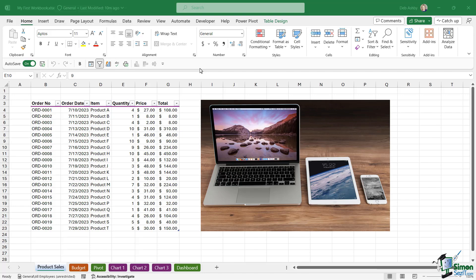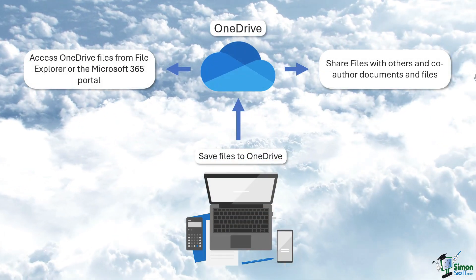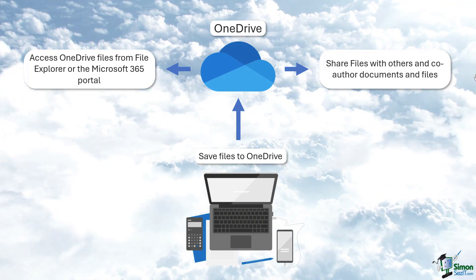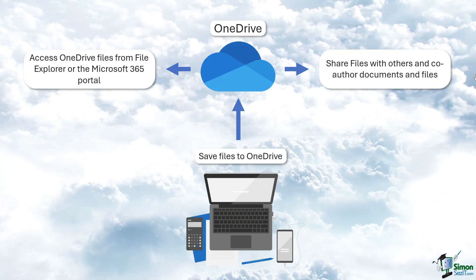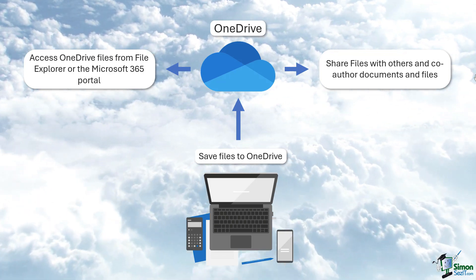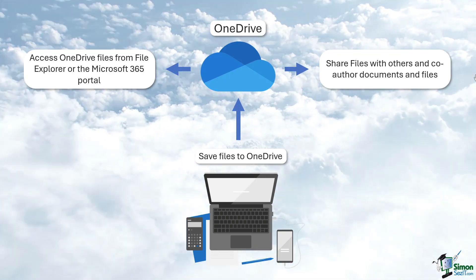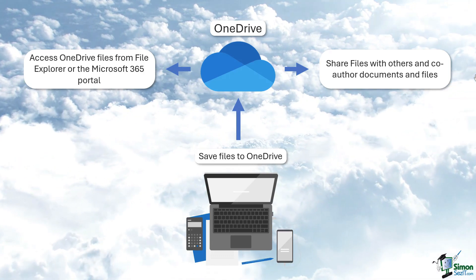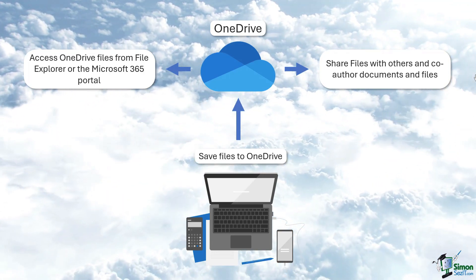When you're working in OneDrive, you're effectively working in the cloud. Cloud storage has been around for a number of years now. One of the advantages to saving your files into the cloud is it makes them easily accessible to other people, so it means we're not having to attach files to emails if we want to share them. We can simply save them to a shared cloud folder and everybody can access the file that way.